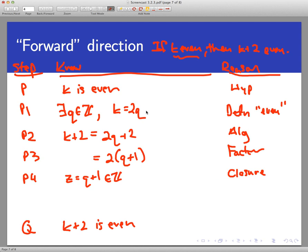Now in my next forward step, I can factor out the 2. That is factoring, also algebra, and now you can begin to feel we are coming in for a landing here. Let's say z equals q plus 1, and that is an integer by closure. Because we knew that q is an integer, said so right here in line P1, and so adding 1 to it gives me another integer. So now I have written k plus 2 equals 2 times an integer by setting z equal to q plus 1. So that gets me to the end. Therefore k plus 2 is even by the definition of even.